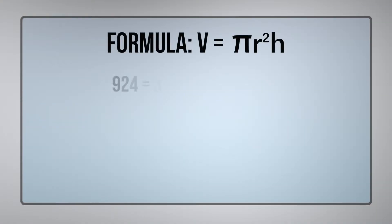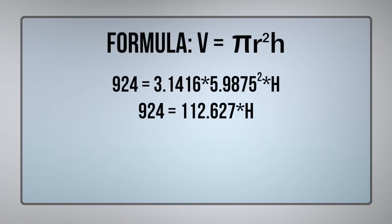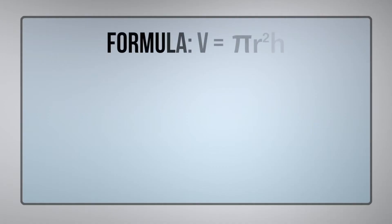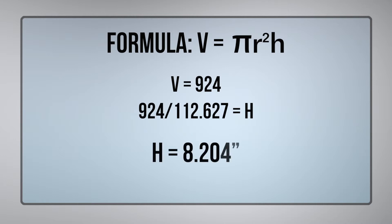So our volume of 924 is equal to pi 3.1416 times radius squared of 5.9875 squared times height. So we have our volume of 924 is equal to 112.627 times height. To figure out our height, we take our volume 924 divided by 112.627 and we get 8.204 inches. So our height is 8.204 inches.